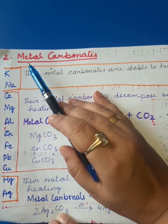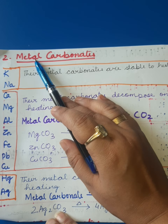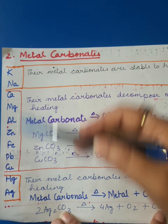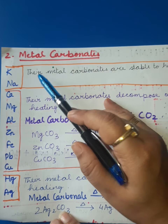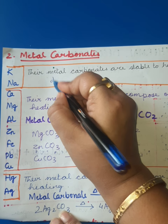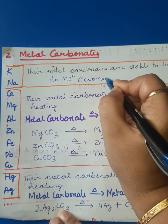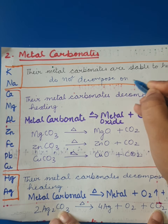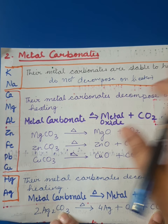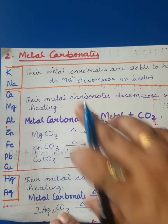Now the second type of compounds: metal carbonates. Again divide the activity series into three categories. For the first category — potassium and sodium — their metal carbonates are stable to heat, meaning they do not decompose on heating, just like their metal hydroxides.